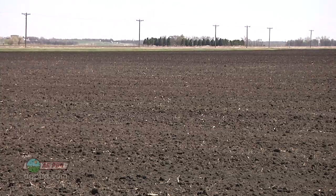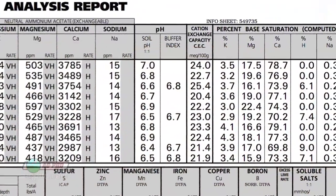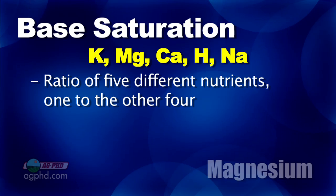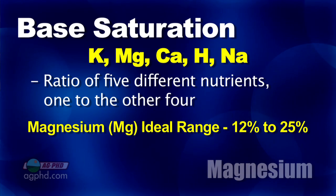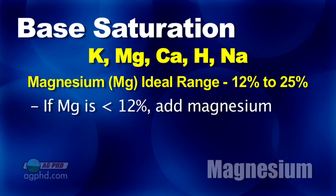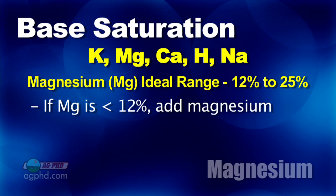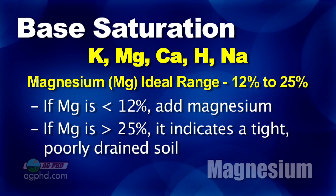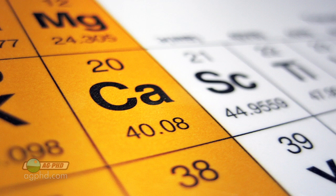So when we talk about too much magnesium, how much is too much? We don't want you to just look at your soil test in parts per million. What we want you to do is look at base saturation — it's a ratio of 5 different nutrients, one to the other four. With magnesium, we would like that to be 12 to 25%. If you're below 12%, you need to be adding magnesium to your soil to maximize yield depending on the crop you're raising. If you have above 25% magnesium, that tells us we've got a tight, poorly drained soil with too much magnesium. One of the nutrients that goes in ratio with magnesium in base saturation is calcium, which is why a lot of people talk about a calcium to magnesium ratio.